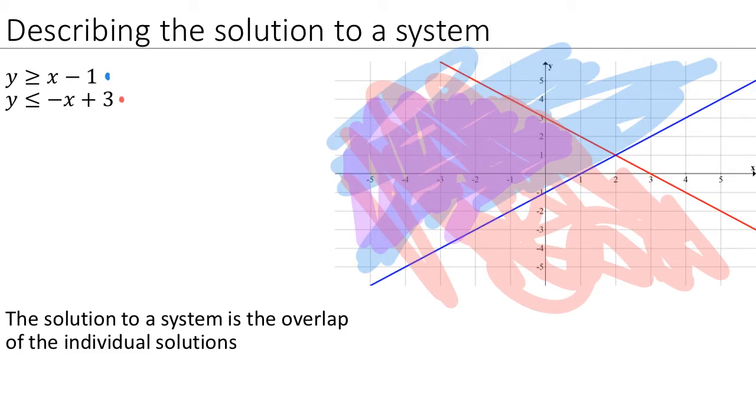So just to be clear, points that are in the region up here that is only blue are not solutions to the system. Points that are in the region that is only red down here are not solutions to the system. It is only the points that are in the overlap that are solutions to the system of inequalities.